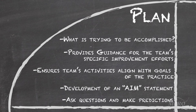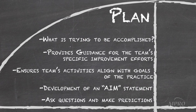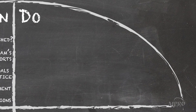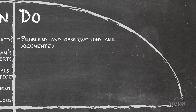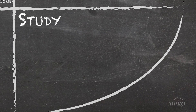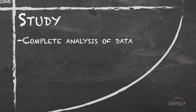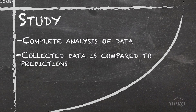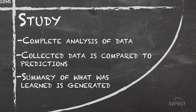One needs to ask questions and make predictions. The Do segment is where the actual plan gets carried out. Unexpected observations and problems are documented, as well as preliminary analysis of the data collected during the Do. The Study process is where a complete data analysis gets performed. The data collected should be compared to the predictions, and a summary of what was learned should be generated.